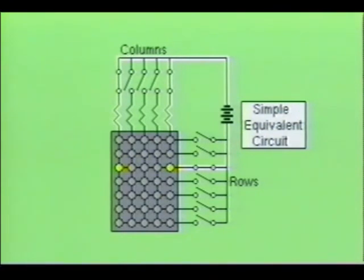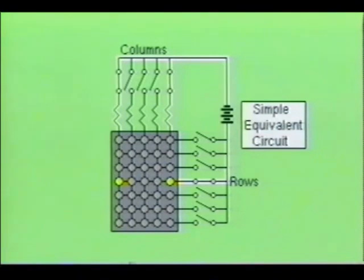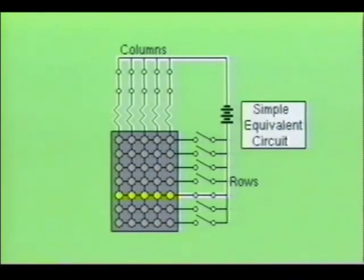The character generator next scans row 3. As row 3 is being scanned, columns C1 and C5 will become high, allowing these two LEDs to turn on. Next, row 4 will be scanned. When row 4 is scanned, inputs on columns C1 and C5 are brought high, causing the LEDs at column 1 and column 5 in row 4 to illuminate. The character generator next scans row 5. When row 5 is scanned, inputs on columns 1, 2, 3, 4, and 5 are brought high, which results in these LEDs turning on.